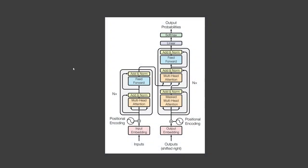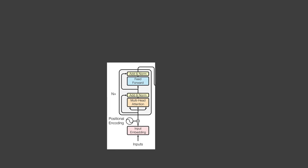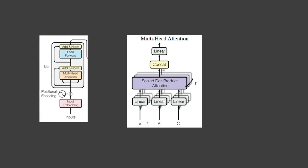In a transformer, the attention module repeats its computations multiple times in parallel — each of these is called an attention head. The attention module splits its query, key, and value parameters into parts and passes each split independently through a separate head. Using multiple attention heads allows the model to capture different types of dependencies and attend to different parts of the input sequence simultaneously. After each attention head computes its own attention scores, the results are typically concatenated or linearly transformed and further processed to generate the final output.